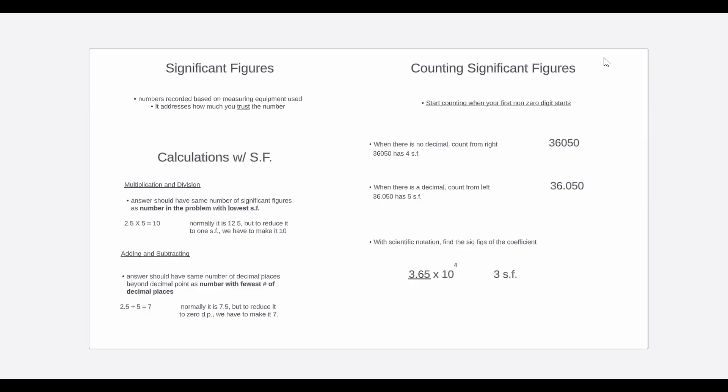So when counting sig figs, you start counting when your first non-zero digit starts. And this counting order depends on if you have a decimal place or if you don't have a decimal place. So if you don't have a decimal point, you start counting from the right side.